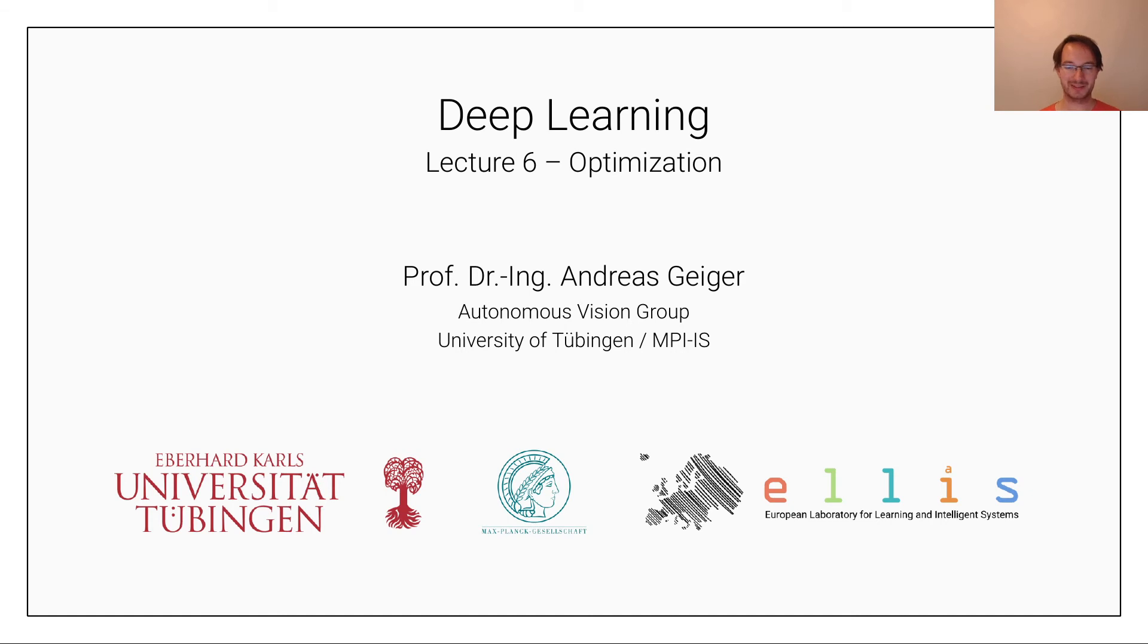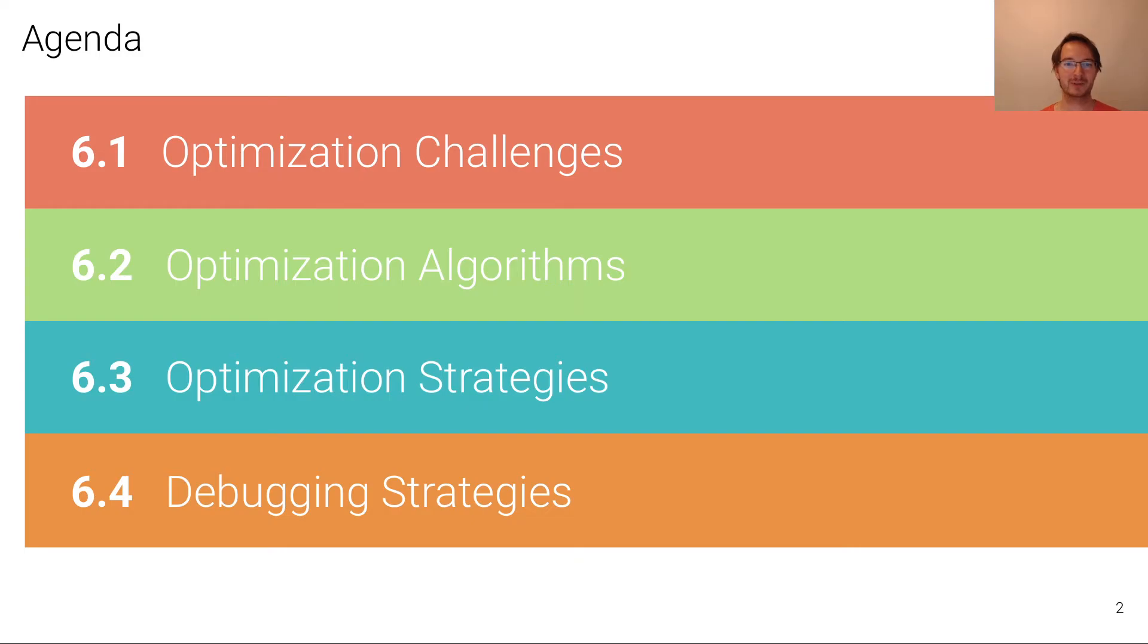Hello and welcome to the sixth lecture of this deep learning course. Today our topic is optimization. We've already discussed the most basic form of optimization, which is gradient descent and stochastic gradient descent. Today we're going to get to know some of the variants of these optimizers that are useful in the context of training deep neural networks.